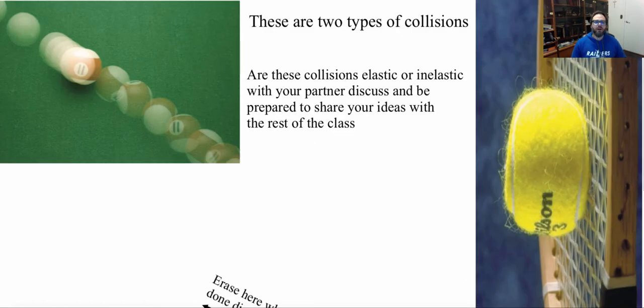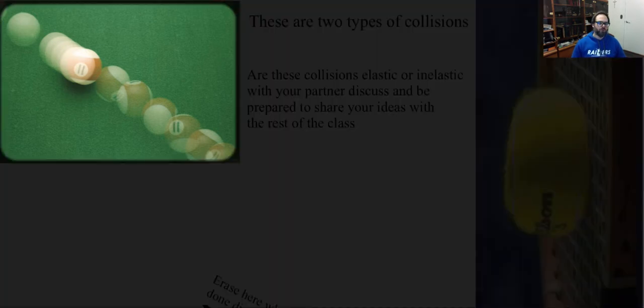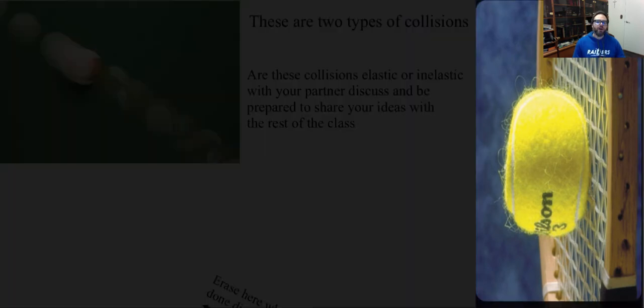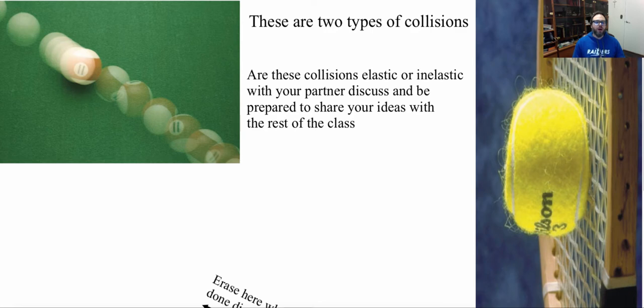So now let's see if you can identify inelastic and elastic collisions. So first we have these billiard balls. Now we have two billiard balls hitting. Are those going to be elastic or inelastic? I want you to think about that. Look at the rules that you've learned for an elastic and inelastic. Then I want you to look at my next picture of a tennis ball being hit with a racket. Is that an elastic or inelastic? I want you to pause the video and take a couple minutes to see if you can figure out which is which and be able to explain why.